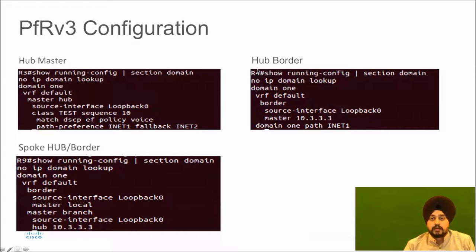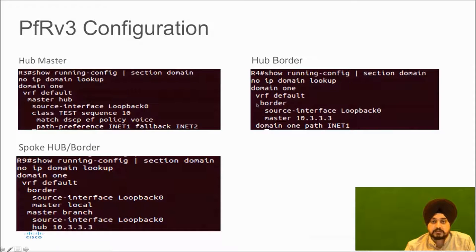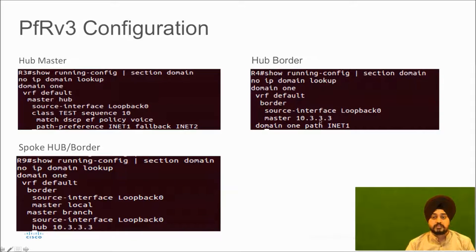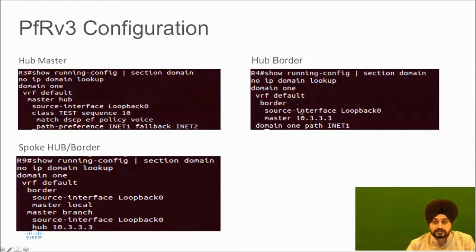For the hub border configuration, we define 'domain one' again. The 'border' command designates this as a border router. We assign a router ID and tell the hub border router who its master is — in this case 10.3.3.3, which is the loopback zero address of the hub master. The last command 'domain one path inet' goes under the DMVPN tunnel interface on this router.